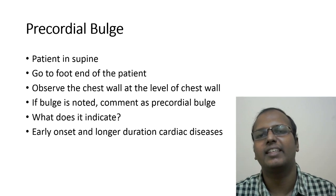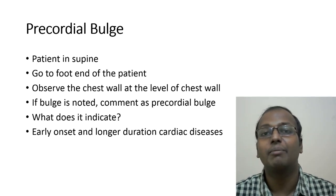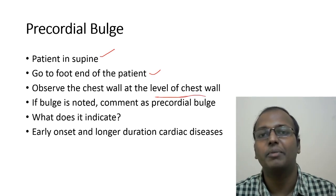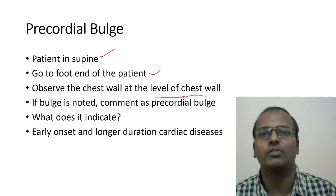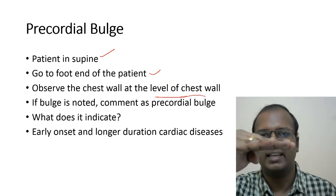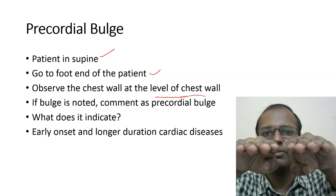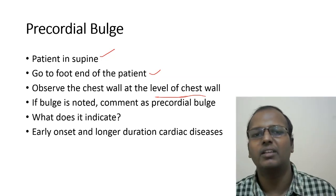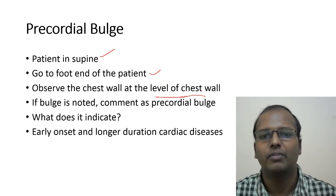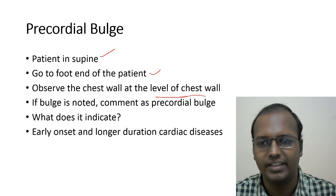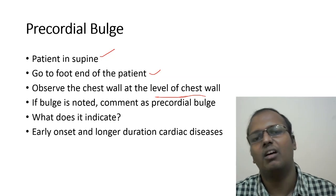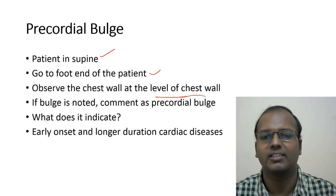Precordial bulge is very important. To examine: patient should be in the supine posture. Go to the foot end of the patient and observe the chest wall at the level of the chest wall — kneel or sit at chest wall level. Look for any elevation in the left parasternal area. Precordial bulge indicates a cardiac problem that began before ossification of the ribs (which occurs around 18–25 years), indicating a long-duration, early-onset cardiac illness.